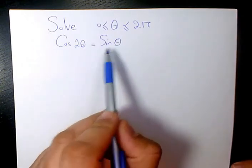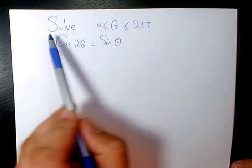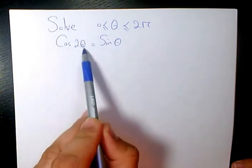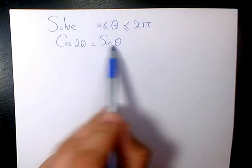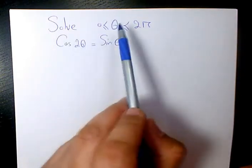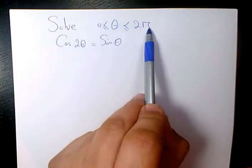The trigonometric equation I chose for you to solve in this video is cosine 2 theta equals sine theta, and we need to solve for theta between 0 and 2 pi.